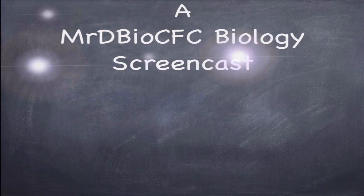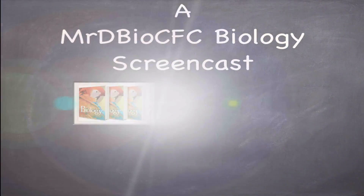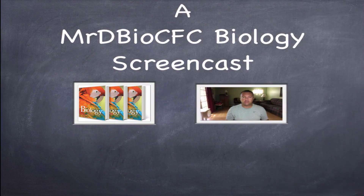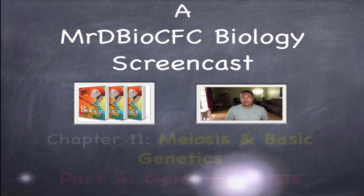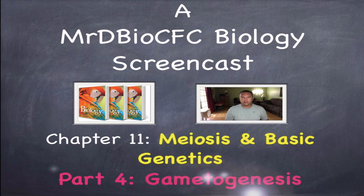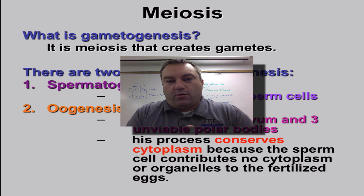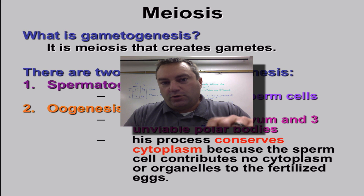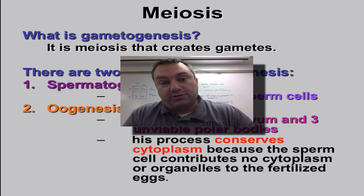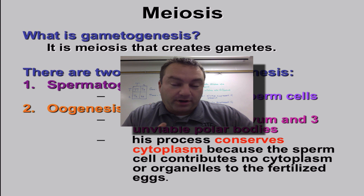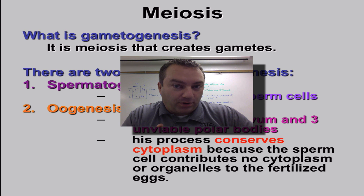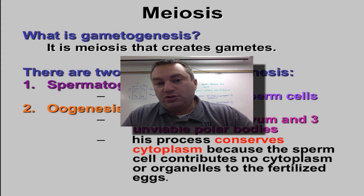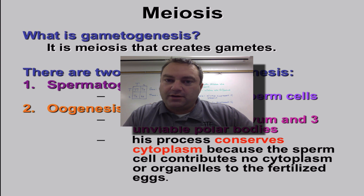Welcome to episode four from our series in chapter 11. In the last episode we learned about meiosis and how it is a form of reduction divisions — you're going from a diploid organism to a haploid organism. You do this by replicating your DNA once and dividing twice. But we're going to revisit meiosis here because we're going to talk about a process called gametogenesis.